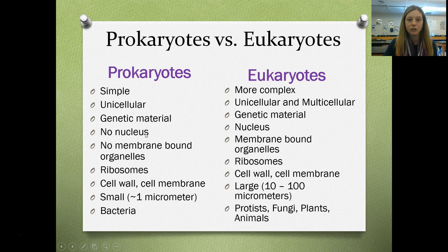Prokaryotic cells do have ribosomes, because those are just little protein structures that produce protein. They do have cell walls and cell membranes, but they are very small — about one micrometer — and our example organisms are bacteria.